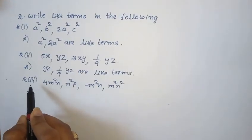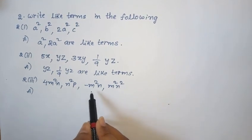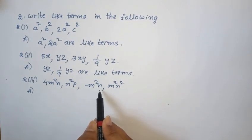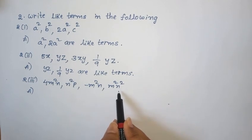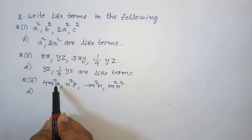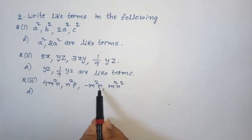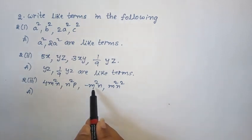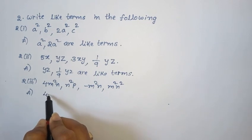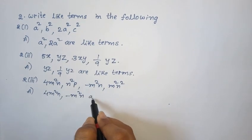Next, 2nd Roman, 3rd one: 4m squared n, n squared p, minus m squared n, m squared n squared. Total four terms — find like terms. In the first term the variables are m squared n, and in the third term also m squared n are the variables. First and third terms have equal variables with same exponents. So 4m squared n and minus m squared n are like terms.